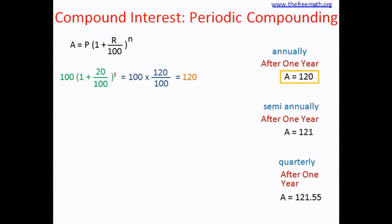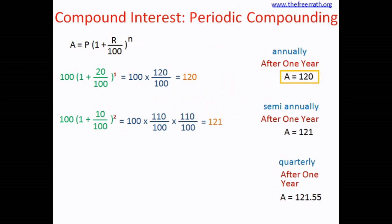For semi-annual compounding, we calculated interest twice a year and split the rate in half, so rate is 10 and n is 2. Substituting: 100 × (1 + 10/100)^2, which is 100 × (110/100) × (110/100). Solving this gives 121. This amount matches the amount we calculated before.